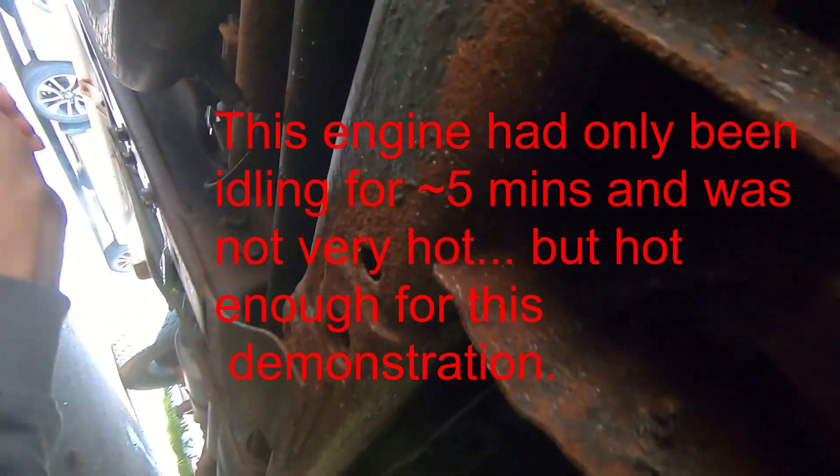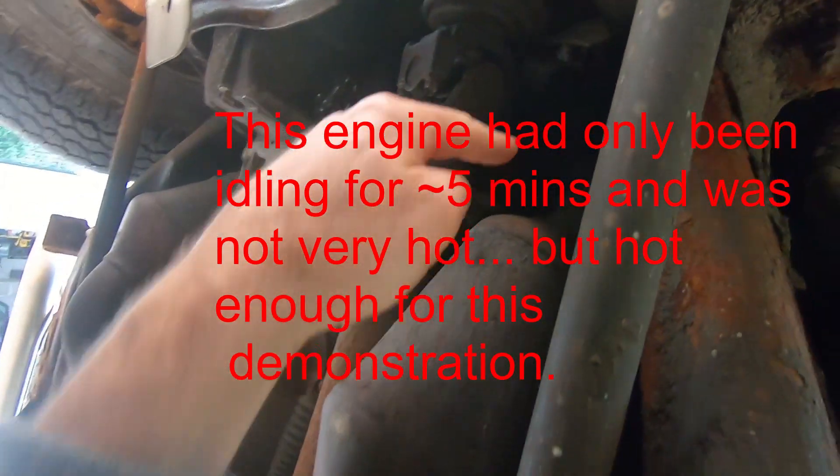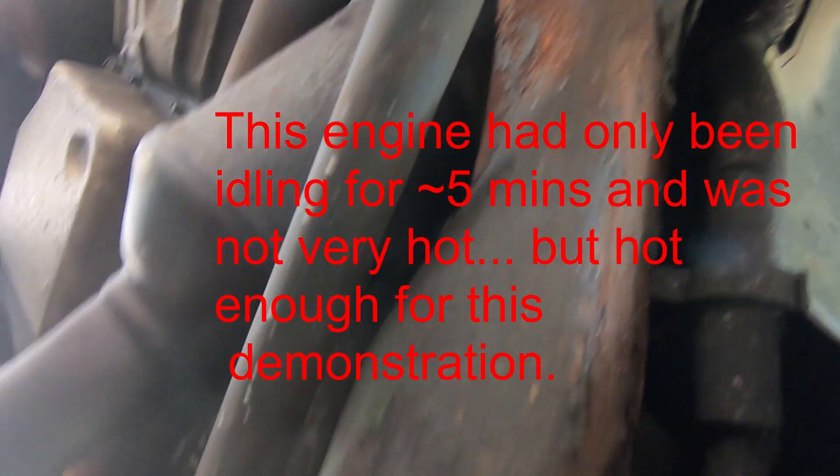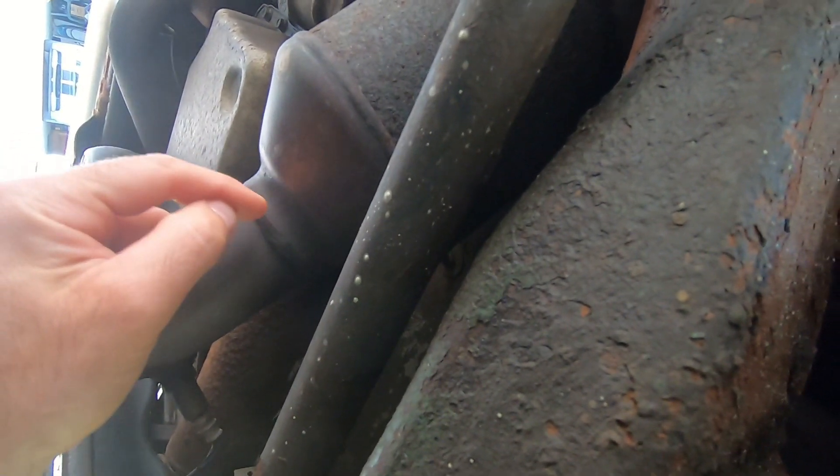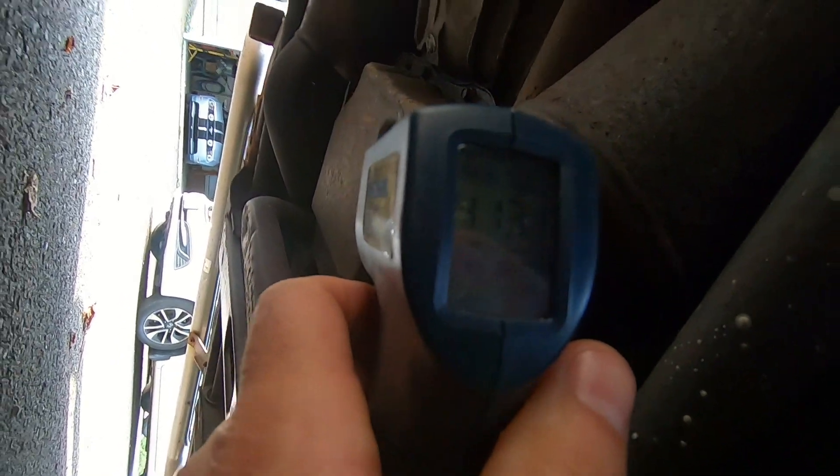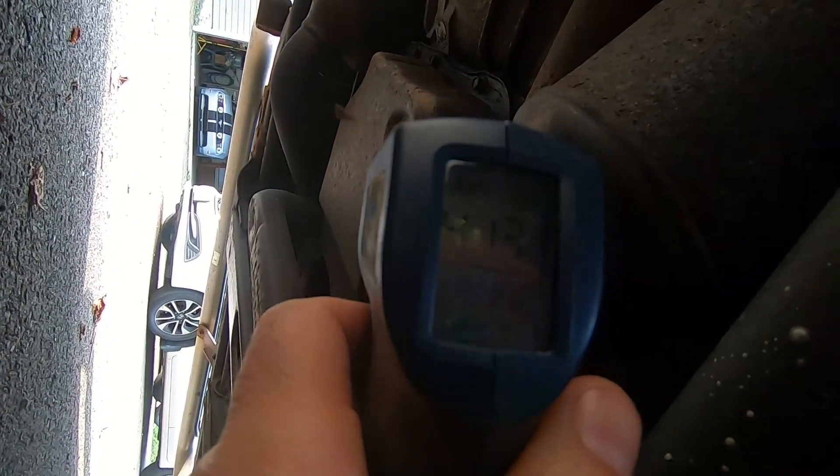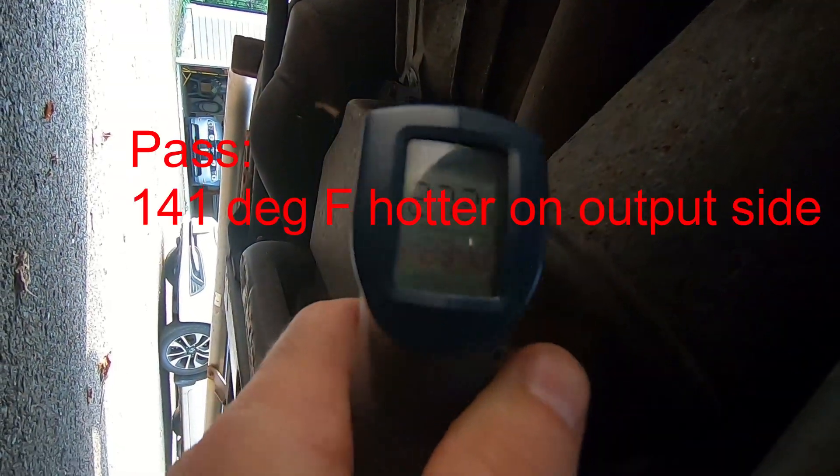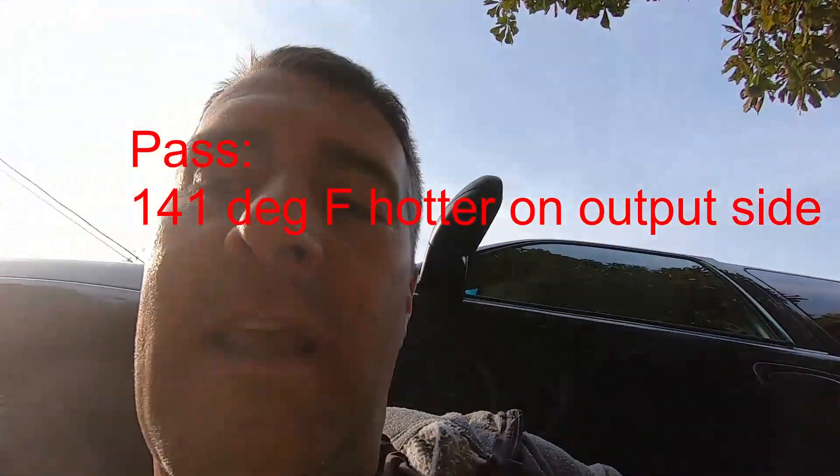Okay, so we're underneath the truck here and here is the downstream O2 sensor and the upstream is somewhere up there, I can't see, it's probably in the exhaust manifold. And here's the cat, you want to measure right at that weld mark right there and the same thing on the input side. What do we got? We've got 413 degrees Fahrenheit on the output and on the input we've got 272 degrees Fahrenheit. So that tells us that the cat is actually working.